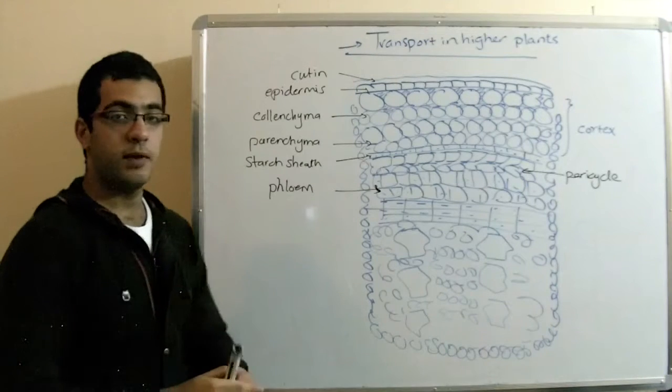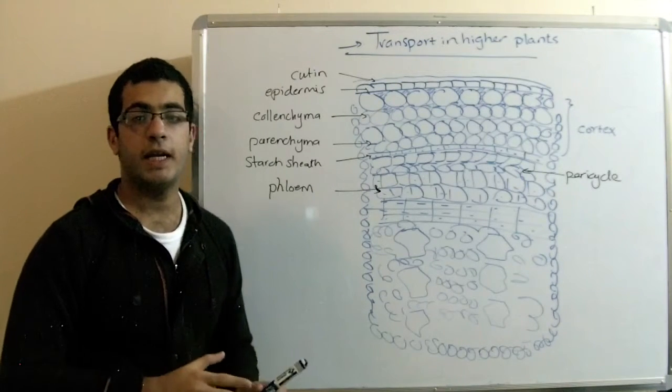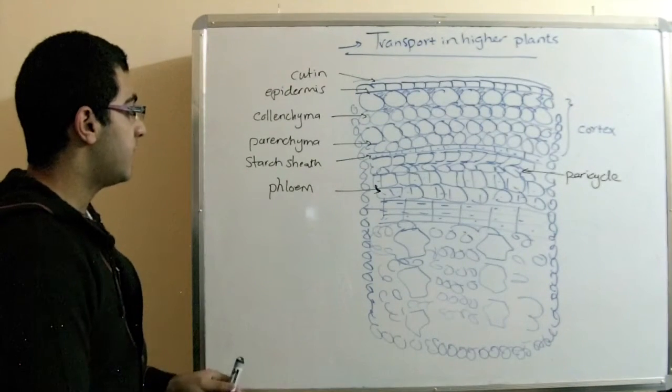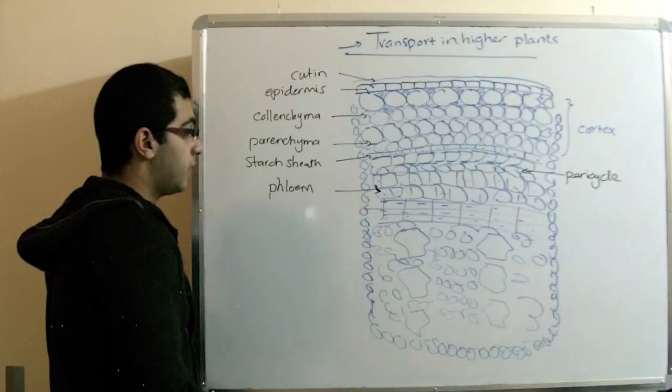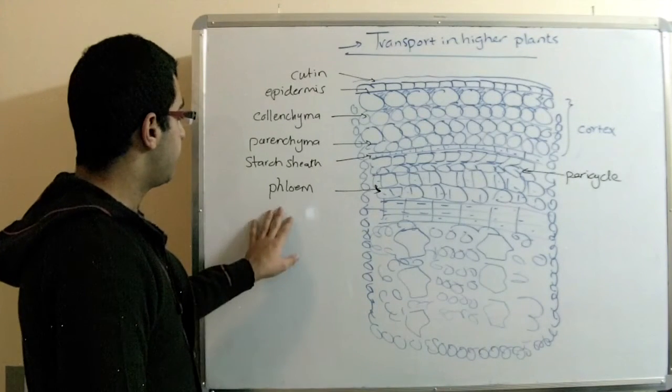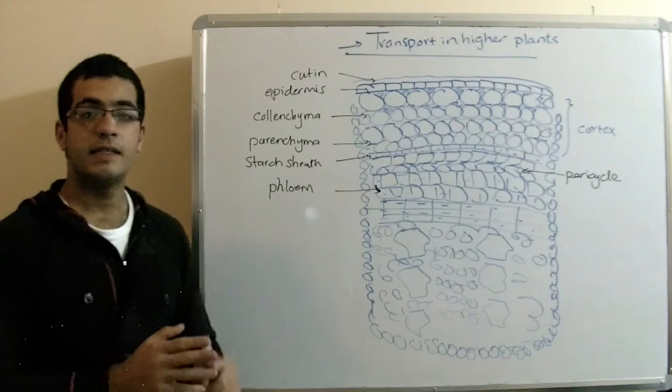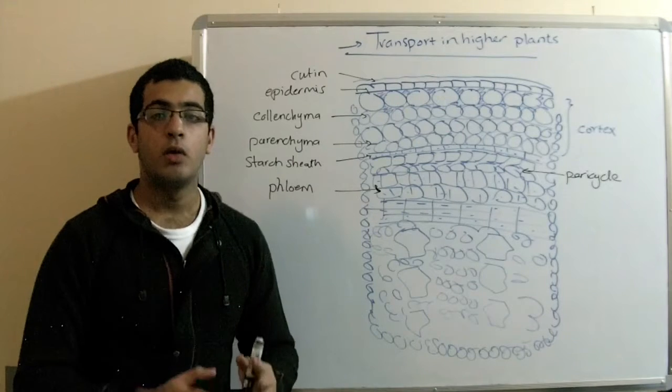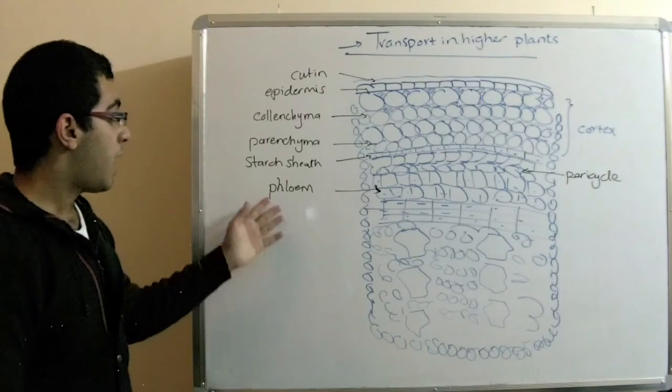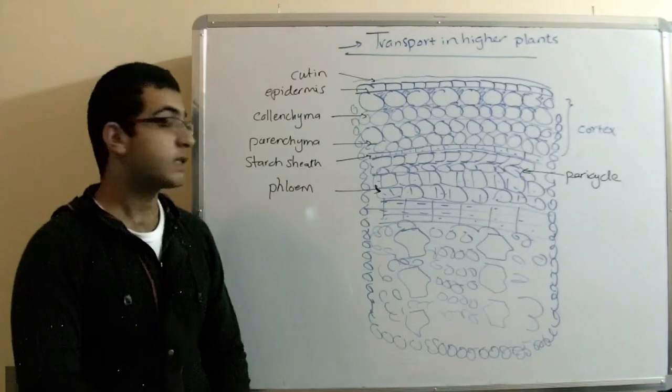The next layer is the phloem that we have just mentioned. As we've said, the phloem helps in translocating the organic substances made by the plant to all the consumption parts. And the phloem tissue consists of sieve plates and sieve tubes with a companion cell. And we will talk about this structure in the next videos.